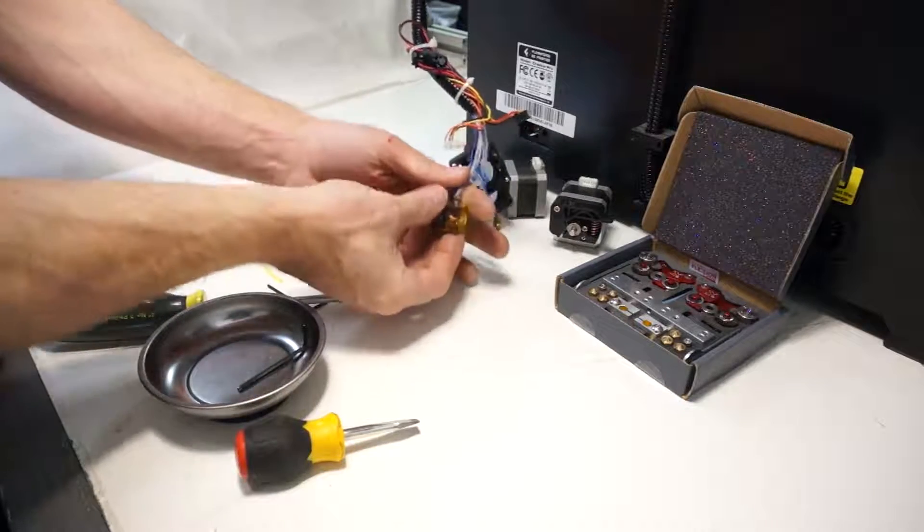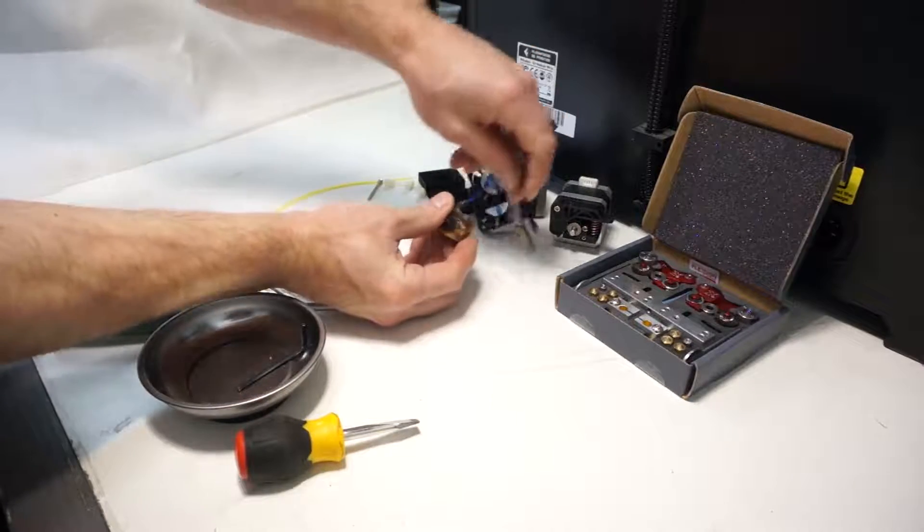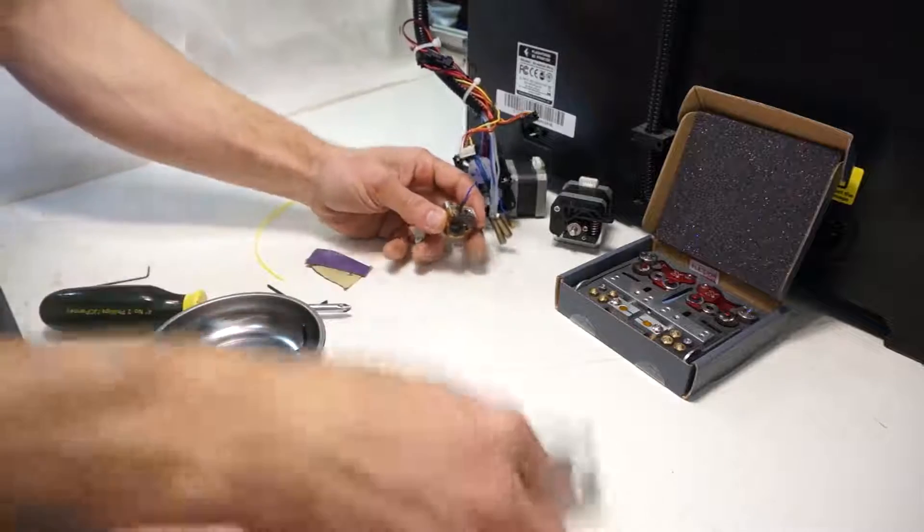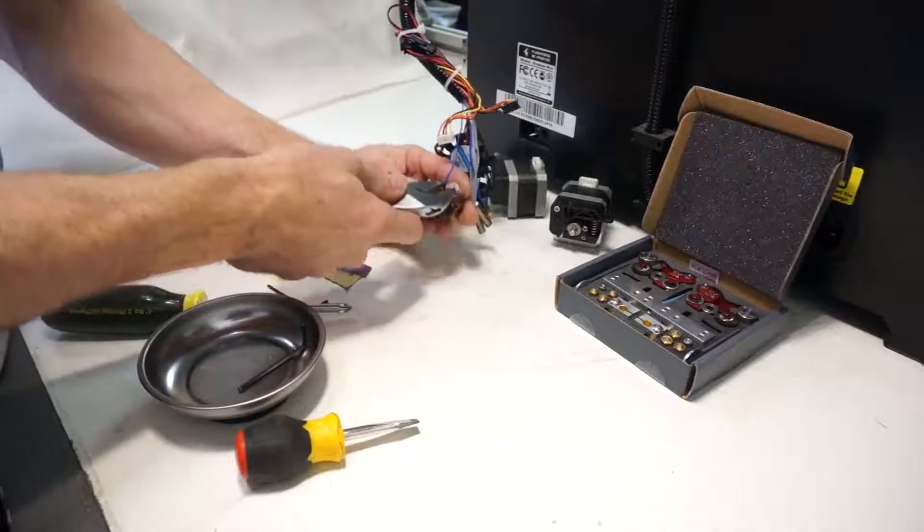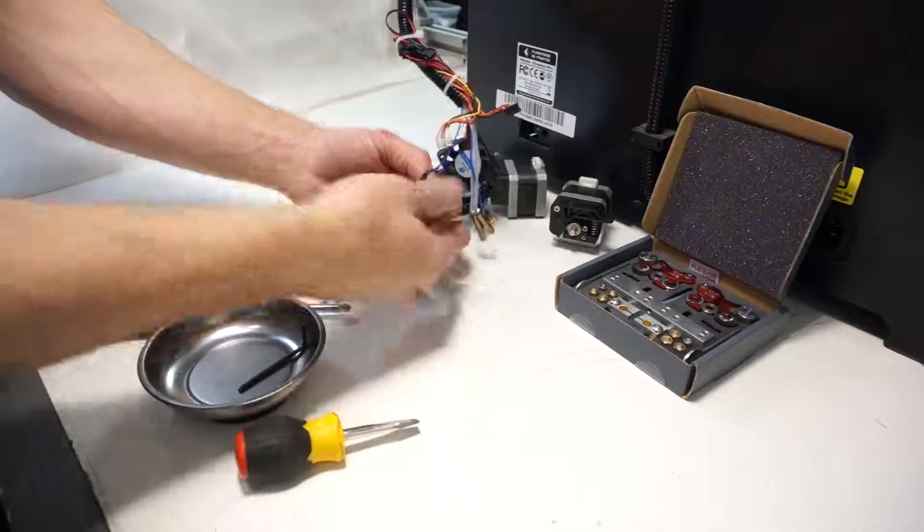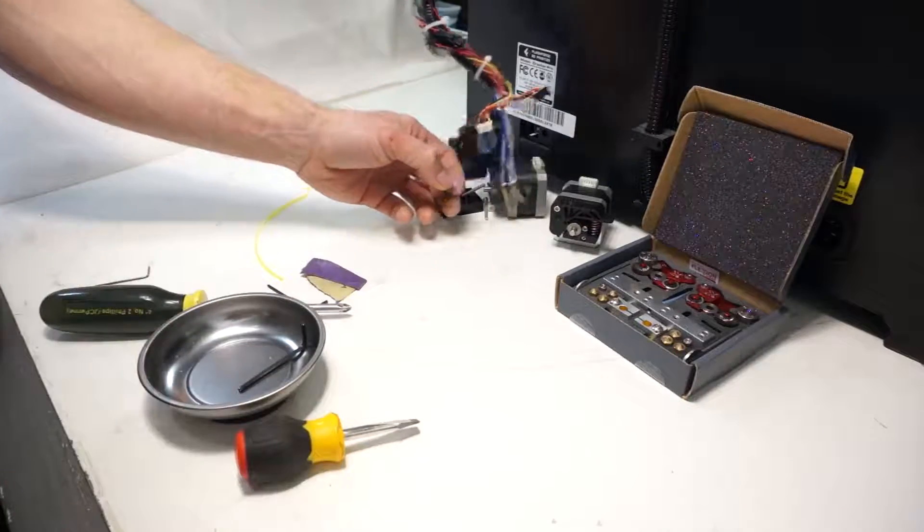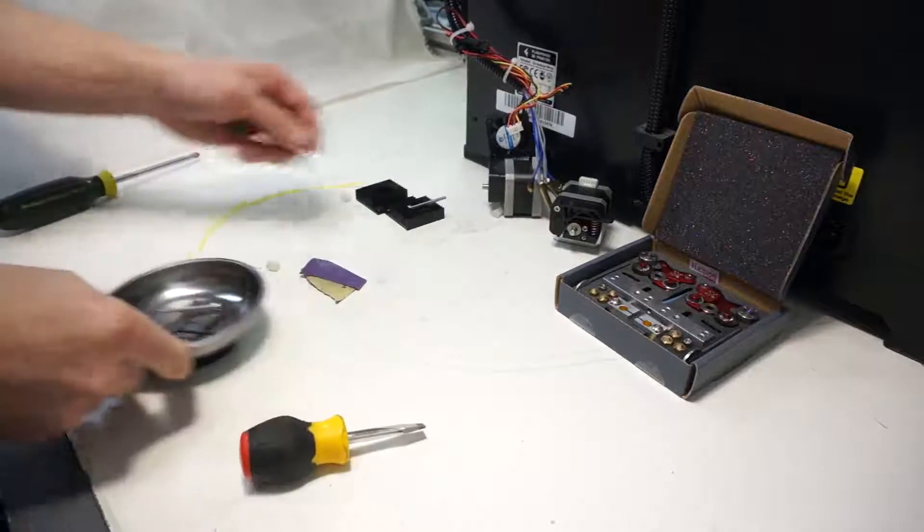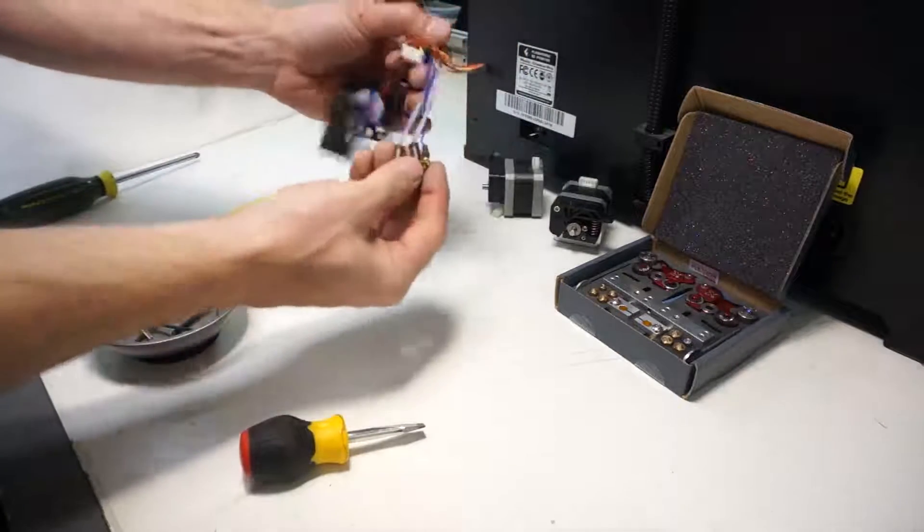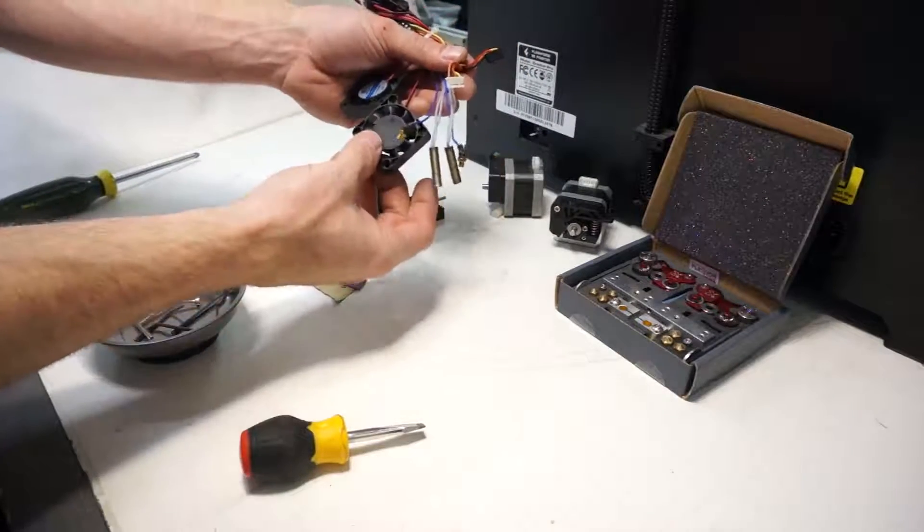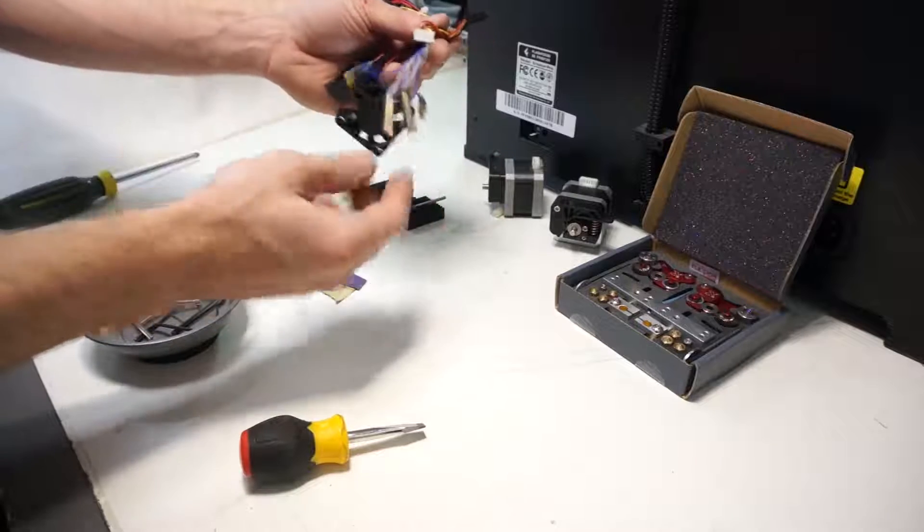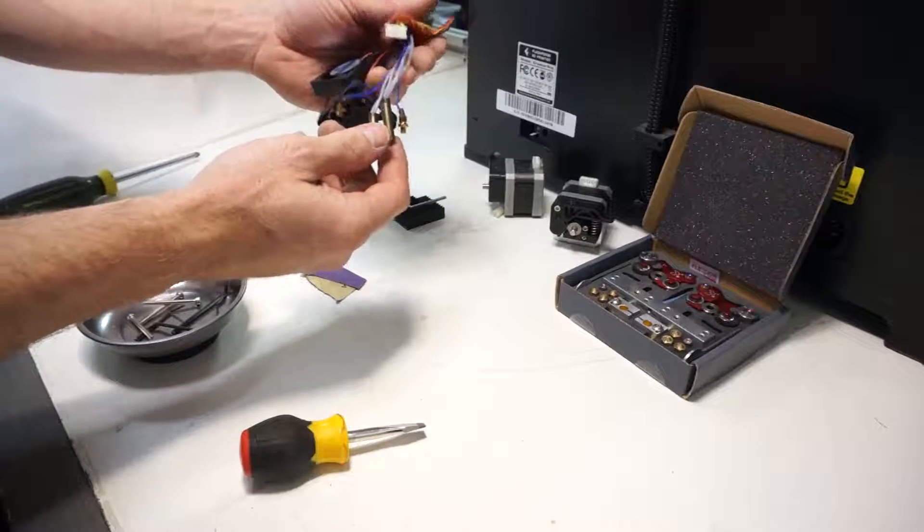So after you're done with the first hot end, follow the same procedure to remove the heater and temperature sensor from the second hot end. And this is where I realized that I did not go through and labeled my wires. So I'm going to have to do some testing to figure out which heater and temperature sensor and fan go with which assembly.